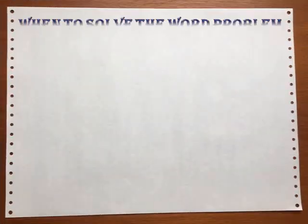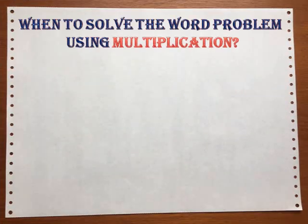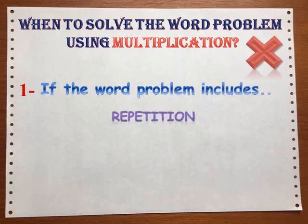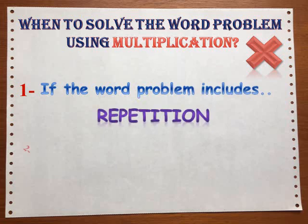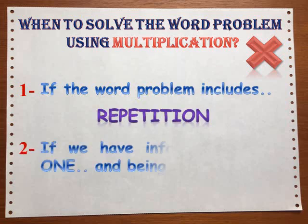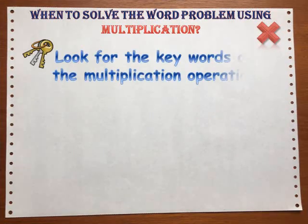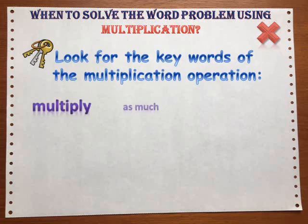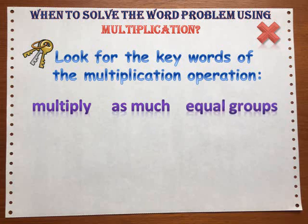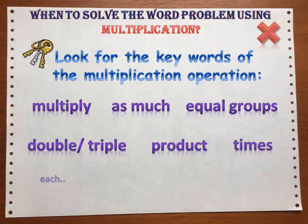When to solve a word problem using multiplication: if the word problem includes repetition, or if we have information about 'each' and are being asked about 'all', look for the keywords of the multiplication operation — multiply, as much, equal groups, double, triple, product, times, each, every, how many in all.